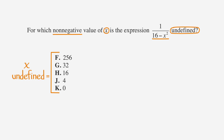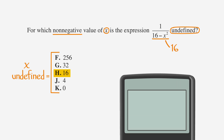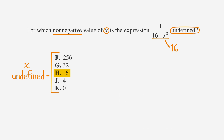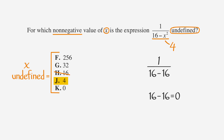Let's start with answer choice H, which is 16. Using our calculator, we find that 16 minus 16 squared equals negative 240. That's wrong because the denominator doesn't equal 0, which means the function isn't undefined, so we can cross out choice H. Because we need a smaller number, let's try choice J. Making x equal to 4: 4 squared equals 16, and 16 minus 16 equals 0. That means the function is undefined when x equals 4, so that's the right answer. Circle choice J.